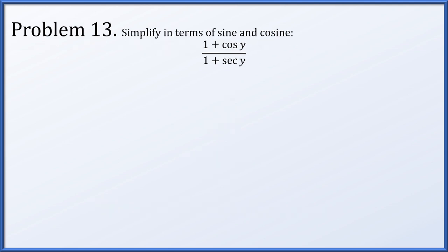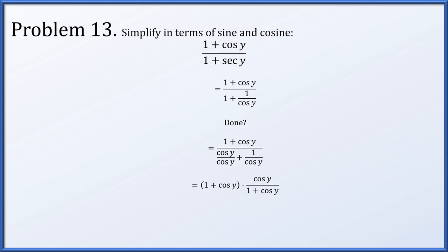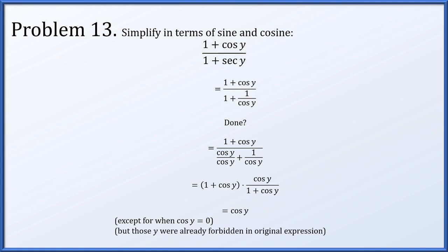In problem 13, we simplify (1 + cos y)/(1 + sec y) in terms of sine and cosine. Replacing sec y with 1/cos y, we give the denominator a common denominator of cos y, getting (cos y + 1)/cos y. The (1 + cos y) factors cancel, leaving cos y. The restrictions cos y ≠ 0 and cos y ≠ −1 were already forbidden in the original expression with secant.